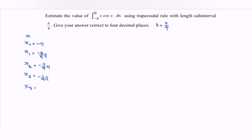x sub 4, then we have 0. So for your information, this one we can also express as negative pi over 2.